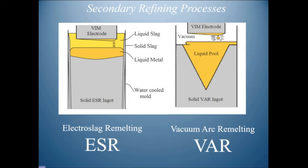The VIM electrode is then carried to either an electroslag or vacuum arc remelting process. In vacuum arc remelting, the electrode is placed in a vacuum chamber, a spark is struck, and the end is melted, with metal depositing drop by drop to build up a vacuum arc remelted ingot — starting from a top-poured vacuum induction melted electrode.